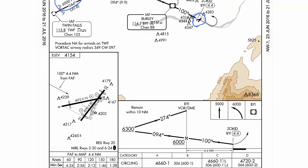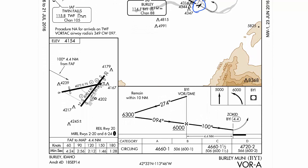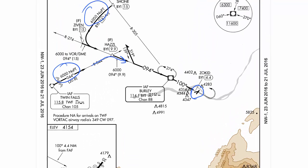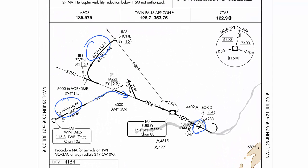We can go back down to the minima section and check that all that's available is circling. So just to recap: a straight-in approach is one in which we can intercept the approach without having to do the procedure turn or some sort of loop and procedure turn. And a straight-in landing is one where we are within 30 degrees of the runway centerline. I hope this helps, and I'll see you again in the next lesson.